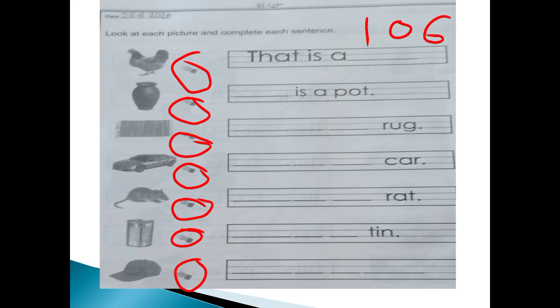You have to do this in HW. I taught you in the online session also. The first picture is already written by book uncle — THAT. Where 'that' goes, 'is' and 'a' also go. The picture is of a hand, so you have to write 'hand' here nicely. Next picture: write 'that is a rug'.